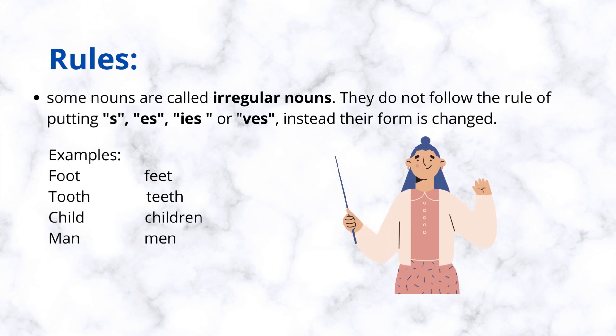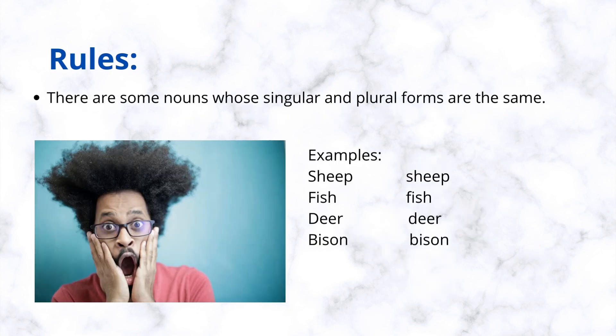Some nouns are called irregular nouns. They do not follow the rule of putting s, es, ies, or ves; instead their form is changed. Examples: foot, feet. Tooth, teeth. Child, children. Man, men.